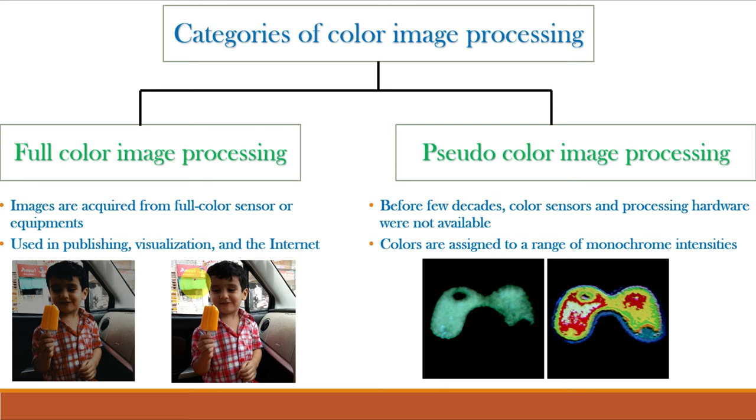Whereas pseudocolor image processing is one where the image is acquired using monochrome sensors and is a grayscale image. And we assign or give some false color values to different ranges of monochrome intensities so that the analysis of the image is better.